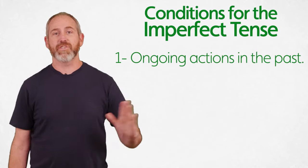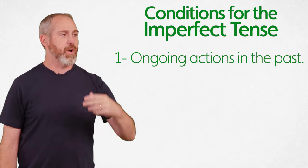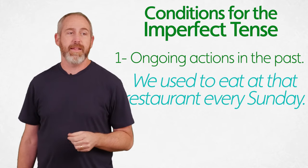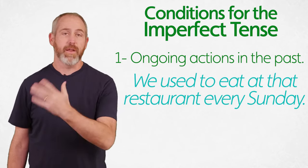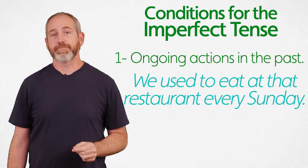Let's take a minute to look at the conditions under which we use the imperfect tense in Spanish. Here's one: ongoing actions. Anything that was ongoing in the past. Something that was repeated or it was habitual. We used to eat at that restaurant every Sunday. See, that was an ongoing, repeated, habitual activity. That would be the imperfect. Now, anytime you would say in English you used to do something, anytime you say used to, that's going to be the imperfect tense.